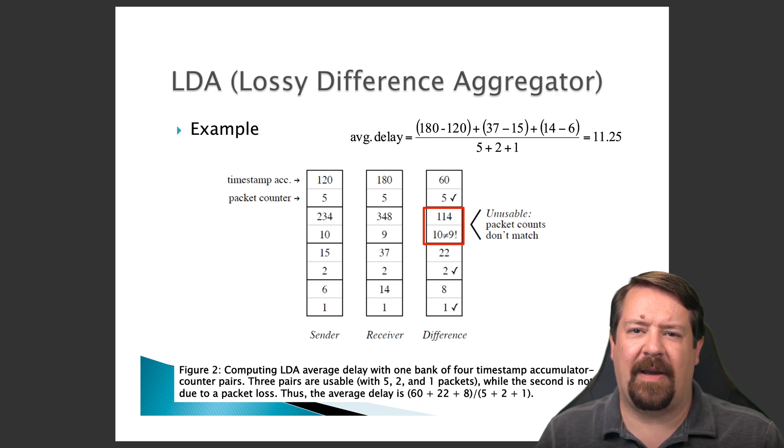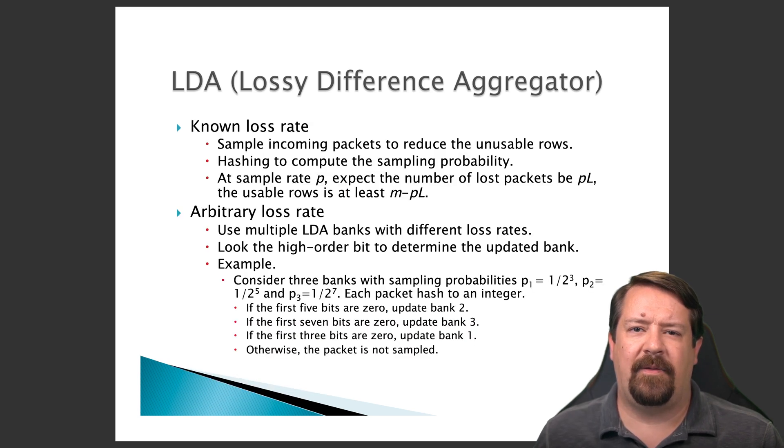For any measurement where the packet count is not the same, the computation must be discarded. We know that some loss is expected in real networks. So the measurement approach needs to be designed in a way that's robust to loss. And the author's approach to this problem is to use multiple LDA banks, lossy difference aggregator banks that are designed to operate under different loss rates.